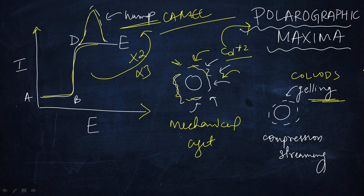When you use some gelling agents, what happens is that it covers the mercury drop. What happens is that compression and streaming is closed. Streaming does not happen, so polarographic maxima is controlled, which is an undesired phenomenon which we do not need.